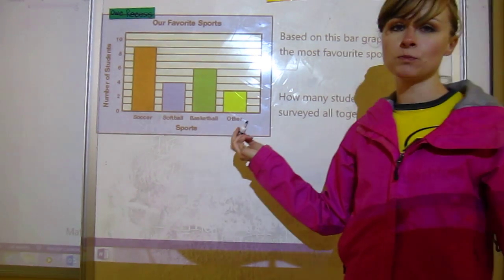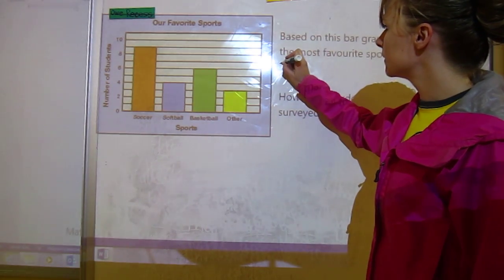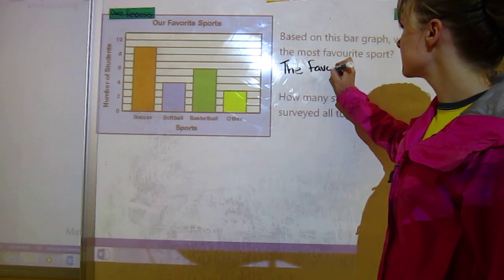It says based on this bar graph, what is the most favorite sport. So which bar is the highest? I think it's obvious. So that means that the favorite sport is soccer.